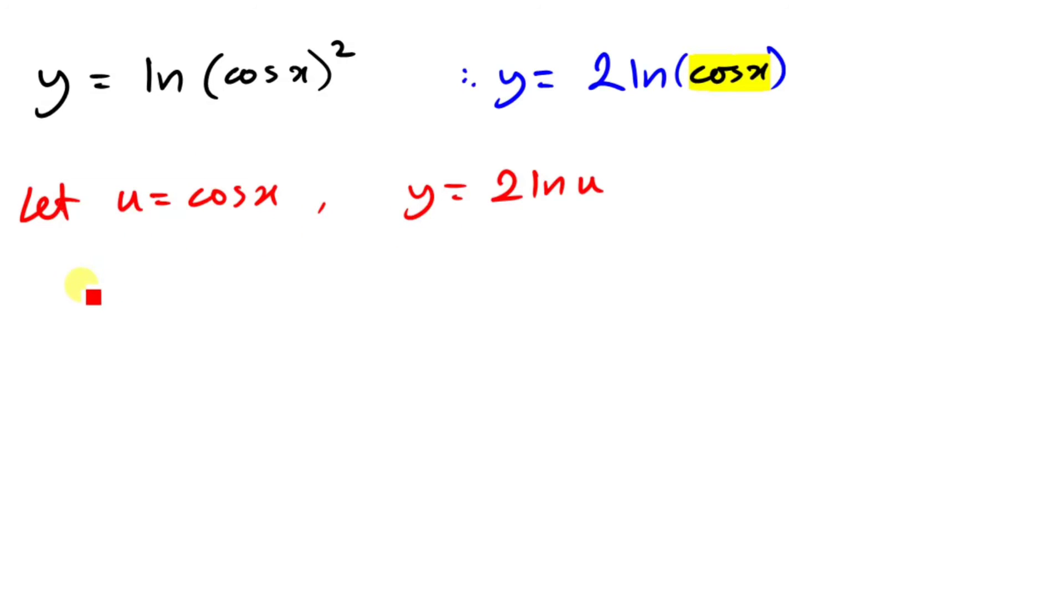Now at this point we're going to differentiate both terms. So we're going to say du over dx. That's going to be negative sin x.